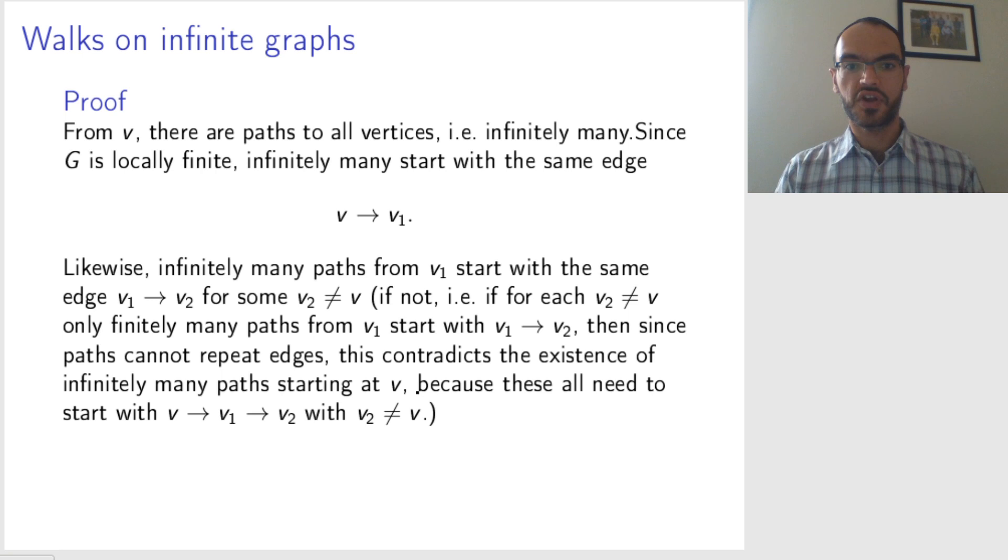Because all those infinitely many paths will need to start with v, then some vertex v1, then some vertex v2 different from v, because you can't repeat vertices in a path. So you will have to have the second vertex v2 different from v.